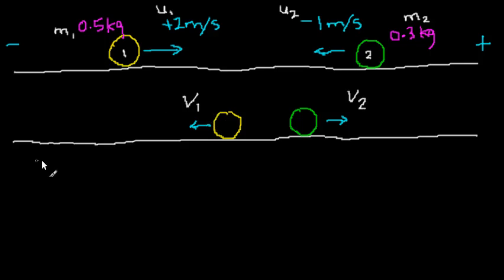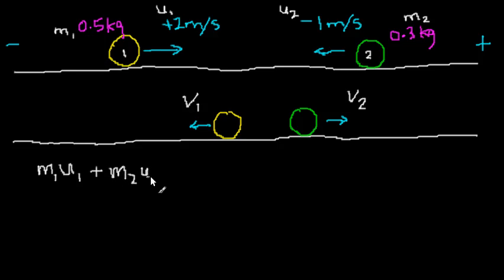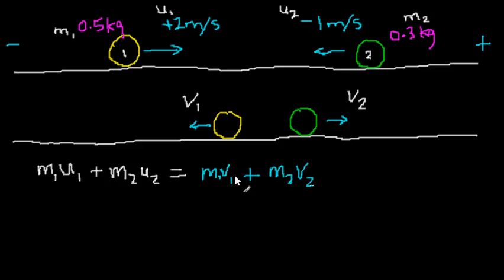Let's look at the conservation of momentum equation: m1·u1 — that's the initial yellow ball momentum — plus m2·u2, which is the momentum of the green ball before collision, equals m1·v1 plus m2·v2 after collision. So using this equation, can we find v1 and v2, if we know the mass of the yellow ball, the mass of the green ball, and the starting velocities of the two balls?